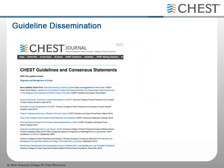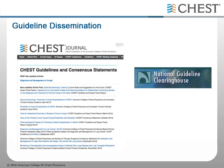It is important to disseminate guidelines and make them publicly available to all stakeholders once the development process is complete. CHEST guidelines are published in CHEST online and in the journal, and sometimes as mobile apps. Guidelines are also submitted to the National Guidelines Clearinghouse and Guidelines International Network Library, which are both publicly available databases that house evidence-based clinical practice guidelines.